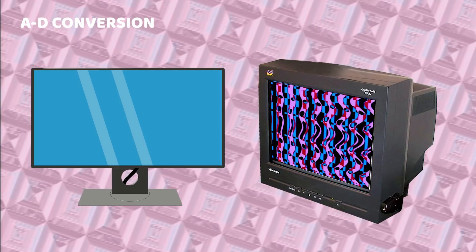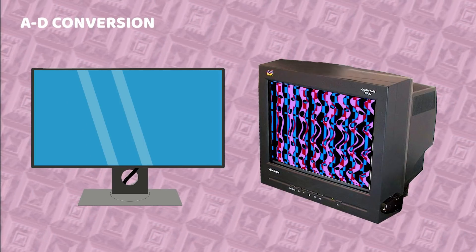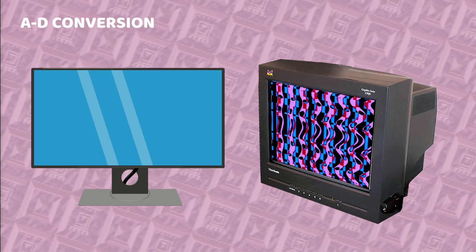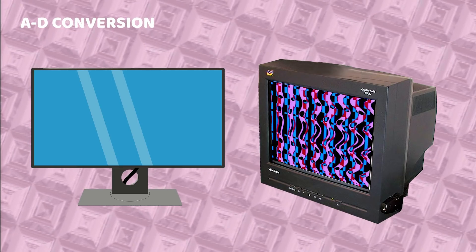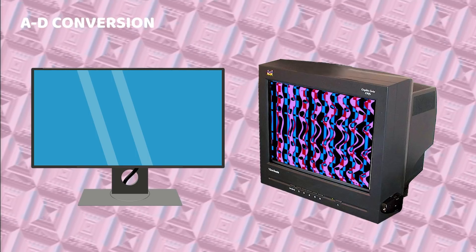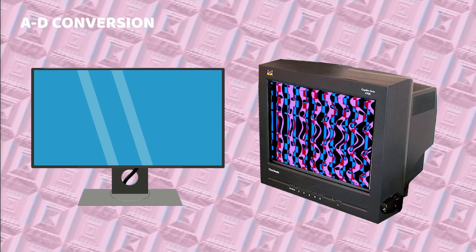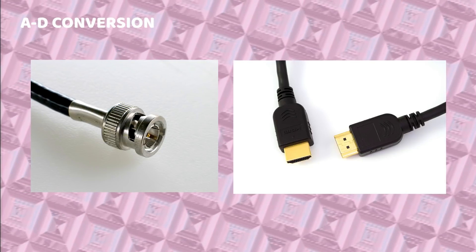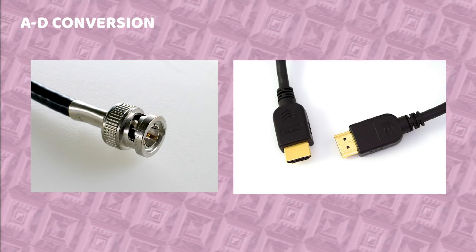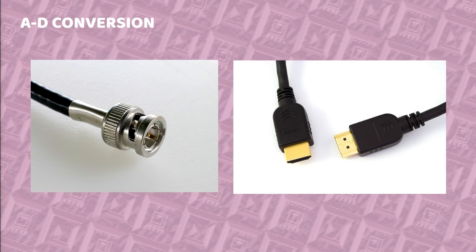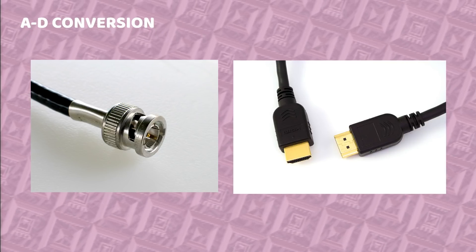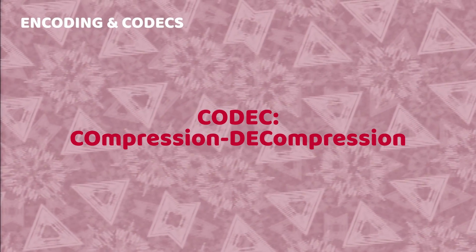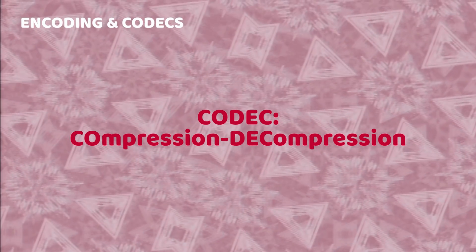To recap the analog to digital conversion segment of your workflow: your objectives are to take your analog video signal and convert it to a digital video signal at the correct frame rate, resolution, and aspect ratio. This signal can then be carried via HDMI, SDI, or directly into your computer. Once your video synthesizer signal has been converted to digital, it's time to encode and record the signal — your digital signal is ready to encode into what is known as a codec.